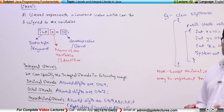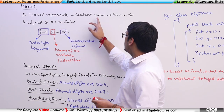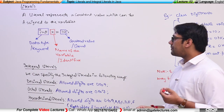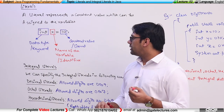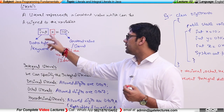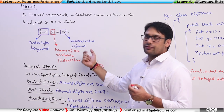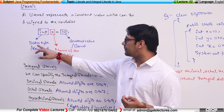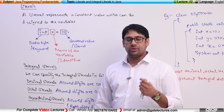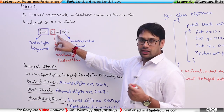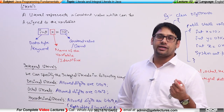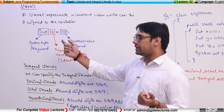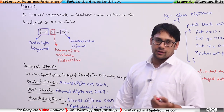A literal represents a constant value which can be assigned to a variable. For example, if we write 'int x = 10', here 'int' is the data type, 'x' is the variable name (also called an identifier), '=' is the assignment operator, and '10' is the constant value — also called a literal.